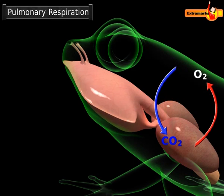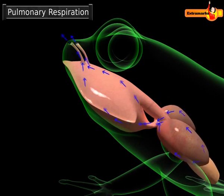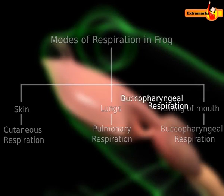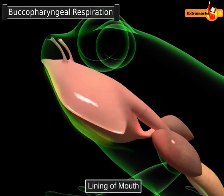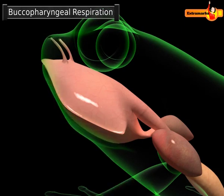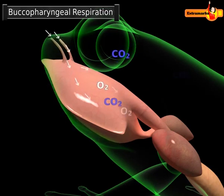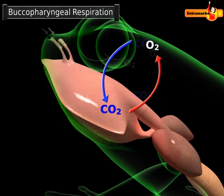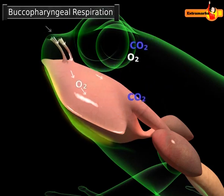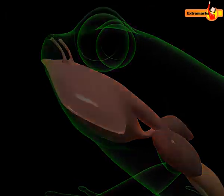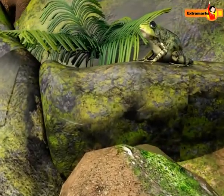Exchange of gases occurs in the lungs. During breathing out, the contraction of the muscles of the lungs pushes the air out. Besides skin and lungs, a frog can also exchange respiratory gases across the moist lining of its mouth. During lung respiration, when a frog draws air into its mouth cavity, the lining of the mouth absorbs some oxygen from the inhaled air and gives out carbon dioxide. This is called buccal pharyngeal respiration.